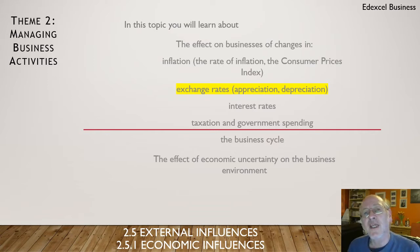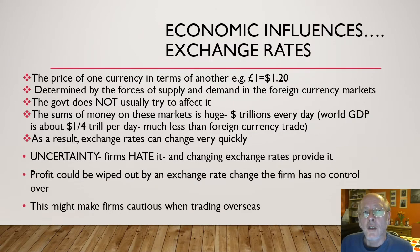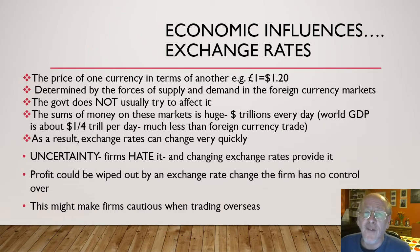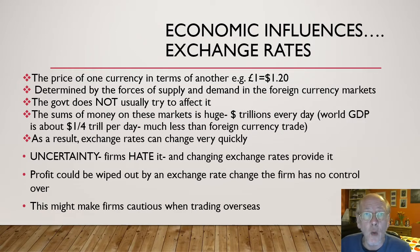An exchange rate is one currency expressed in terms of another — for example, 1 euro 12 cents to the dollar, or one pound equals 89 euro cents. Exchange rates are determined by the markets, largely by speculators. Governments don't generally try to interfere in this market, though the Chinese government has been accused by President Trump of being a currency manipulator — they do try to hold their currency low, maintaining a weak currency.